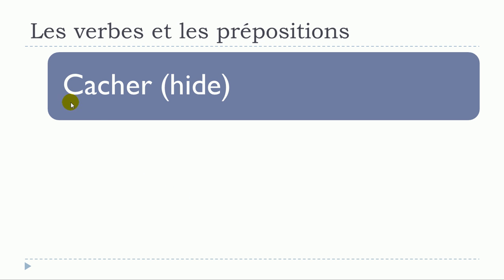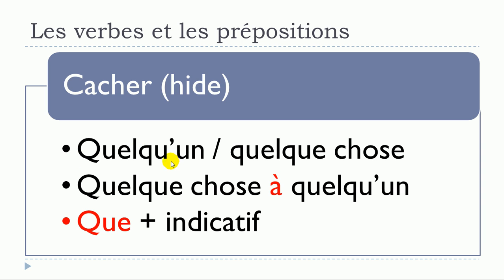Next verb: cacher, which means to hide. Cacher quelqu'un or cacher quelque chose — no preposition. Cacher quelque chose à quelqu'un. And cacher que — be careful, because after que it should be at the indicatif, not the subjunctive. So: cacher que plus indicatif.